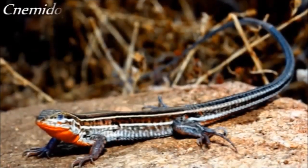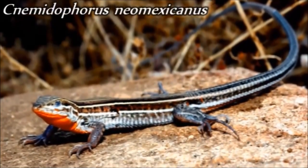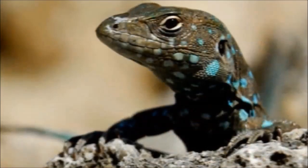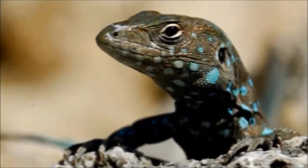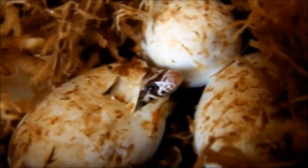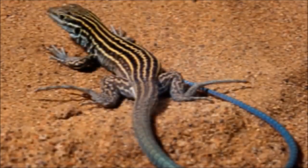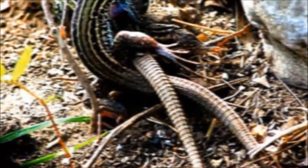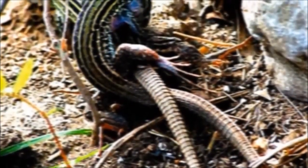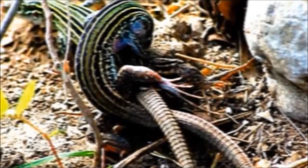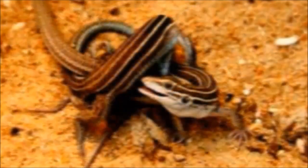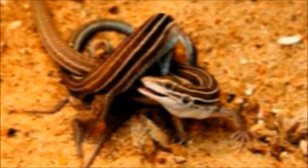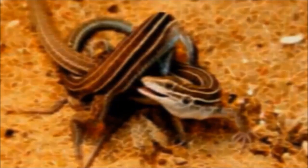Certain species of the whiptail lizard, of the genus Cnemidophorus, only exist in the female sex. Although this might seem like a problem when it comes to propagating the species, females do not require a male for reproduction, as they engage in parthenogenesis, a form of asexual reproduction where an unfertilized egg develops into a new individual. Despite the fact these lizards reproduce asexually, some female lizards try to act like a male by mounting another female in a futile attempt at copulation. Because these lizards evolved from a species that reproduced through sexual fertilization, this unnecessary practice is viewed as a vestigial behavior — a remnant of their ancestral nature.